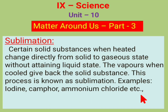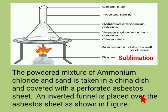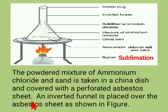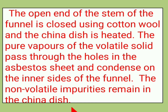To explain the process of sublimation: a powdered mixture of ammonium chloride and sand is taken in a china dish. It is covered with a perforated asbestos sheet and an inverted funnel is placed over the asbestos sheet. The open end of the stem of the funnel is closed using cotton wool.